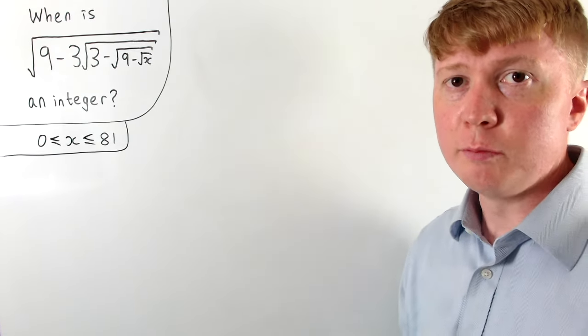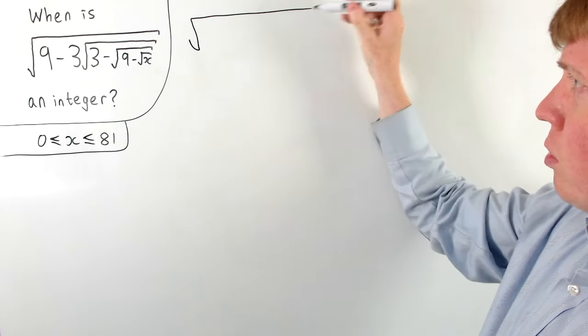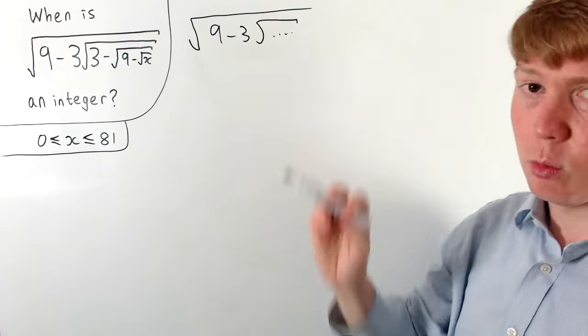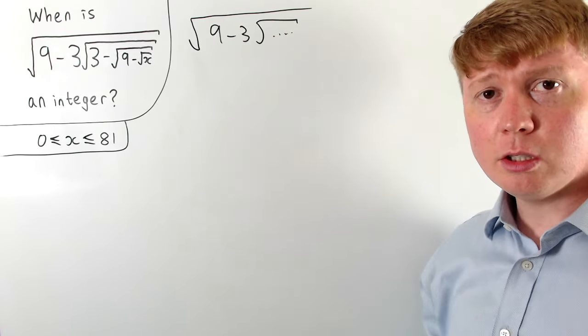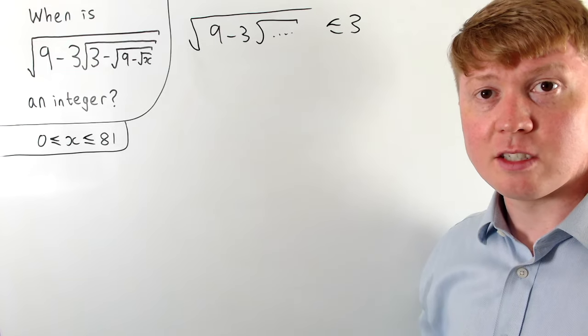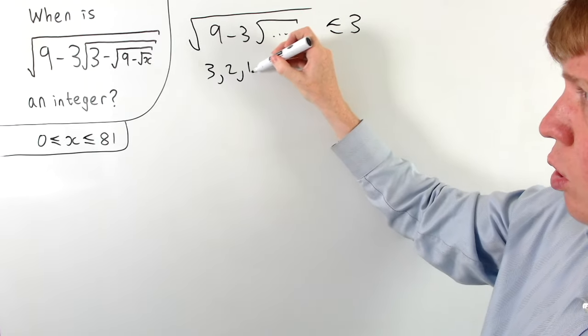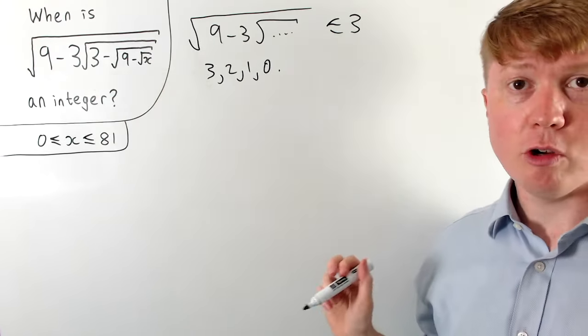We can apply a similar process to our original expression, since we have the square root of nine minus three times the square root of something. We know we're subtracting something positive, so the biggest this original expression could be is the square root of nine. So it has to be less than or equal to three, and because it's a square root, it's at least zero. The only possible integer values are therefore three, two, one, and zero.